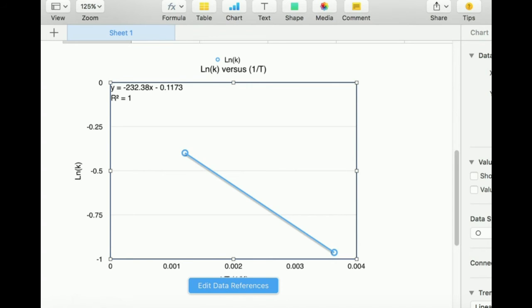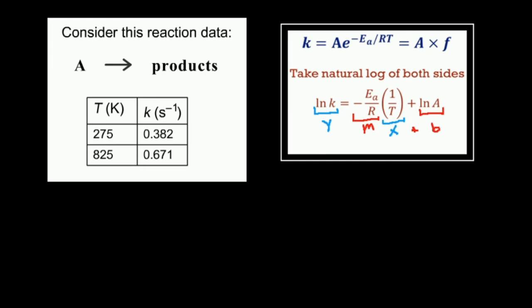So my slope, negative 232.38 is equal to negative activation energy divided by the gas constant.